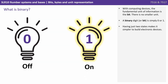With computing devices, the fundamental unit of information is the bit. There is no smaller unit. A binary digit, or bit, is simply represented by a zero or one. Having just two states makes it simpler to build electronic devices.